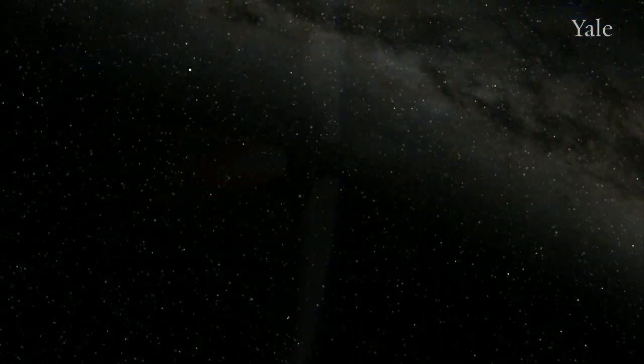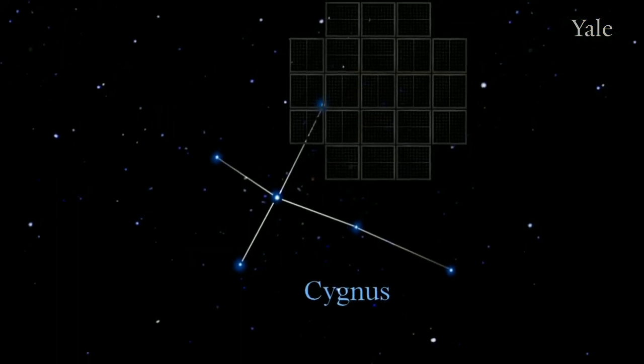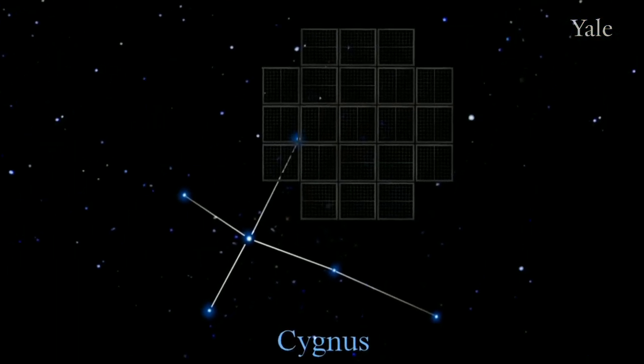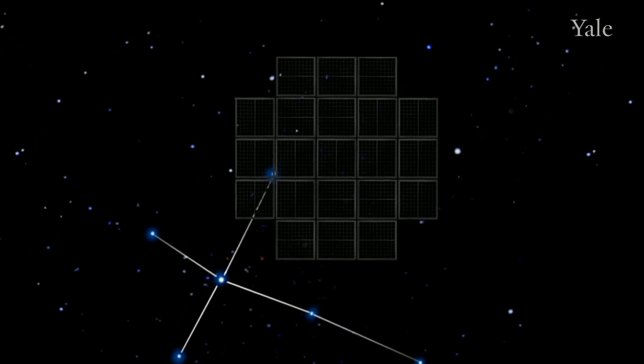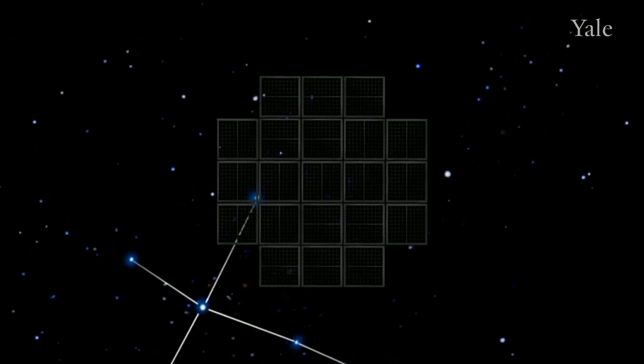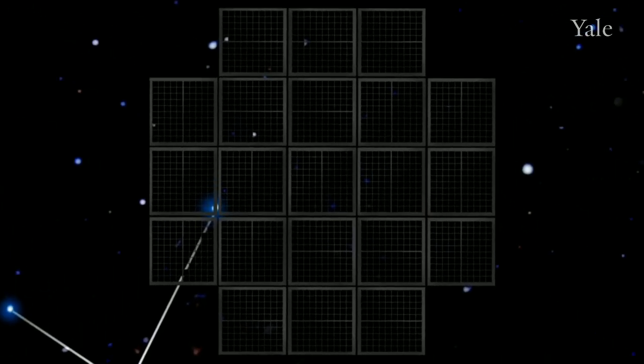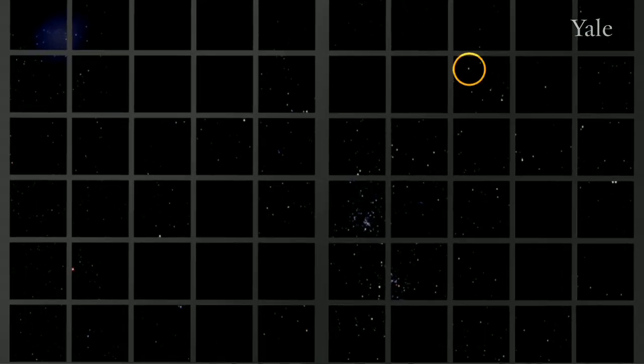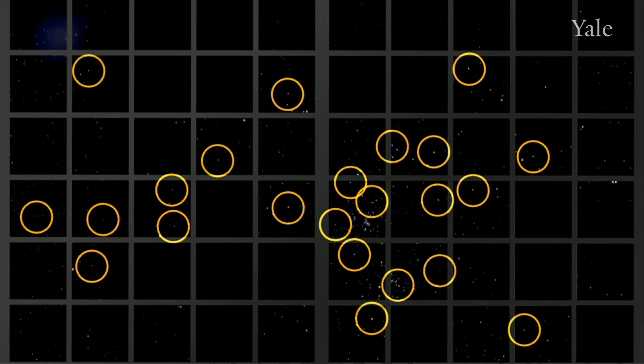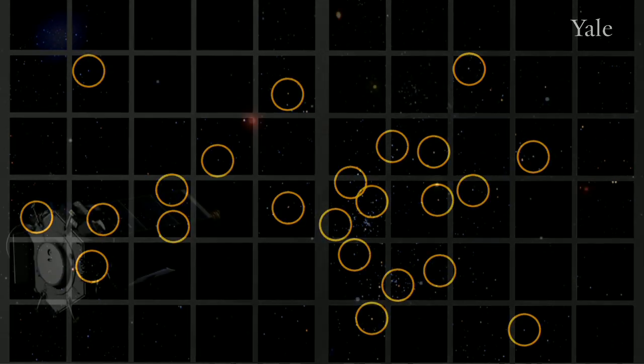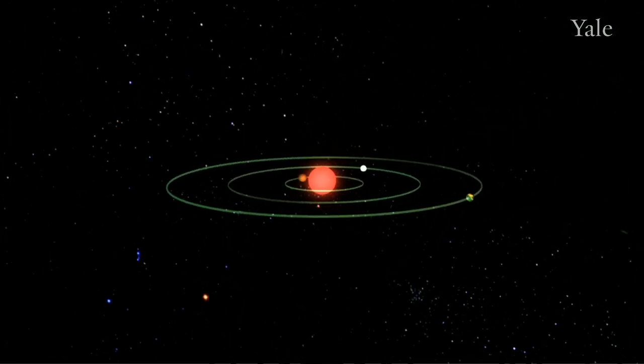Kepler is staring at a field of stars near the constellation Cygnus, where there are 200,000 stars in this field. Unblinking, the telescope stares at these same stars, takes measurements every 30 seconds, and watches for a slight dimming in any of these stars as a planet passes in front of it.